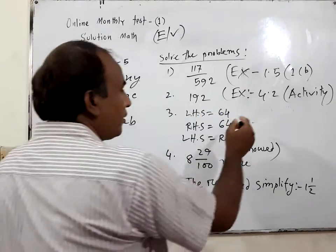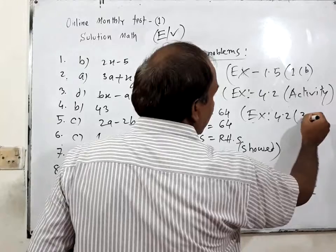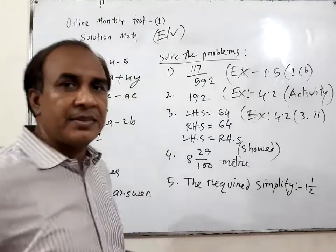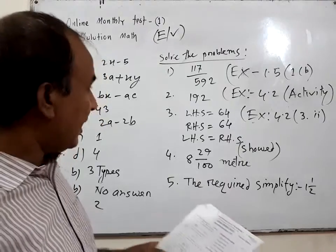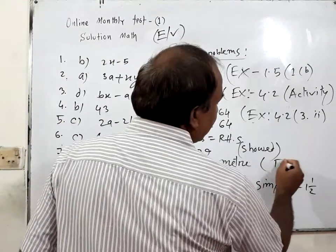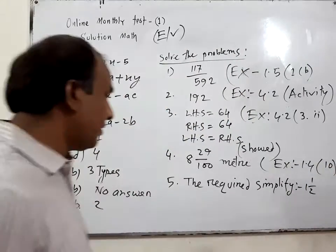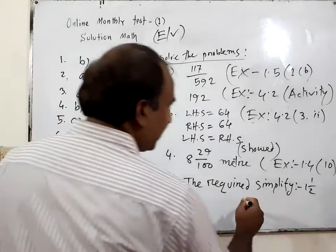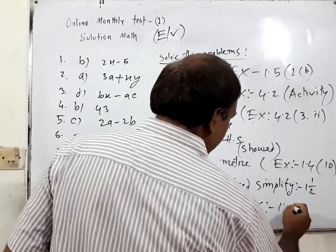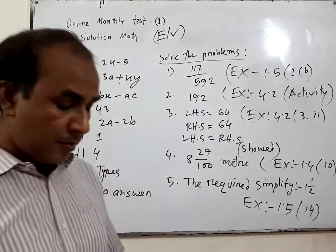Number 3, this math also belongs to exercise 4.2, number 3. We solved this math 2, 3 times. Number 4: 8 whole 29 by 100 meters. It is exercise number 1.4, math number 10. You can easily see. Number 5, this is exercise 1.5, number 14, exercise 1.5, number 12. You can also see.